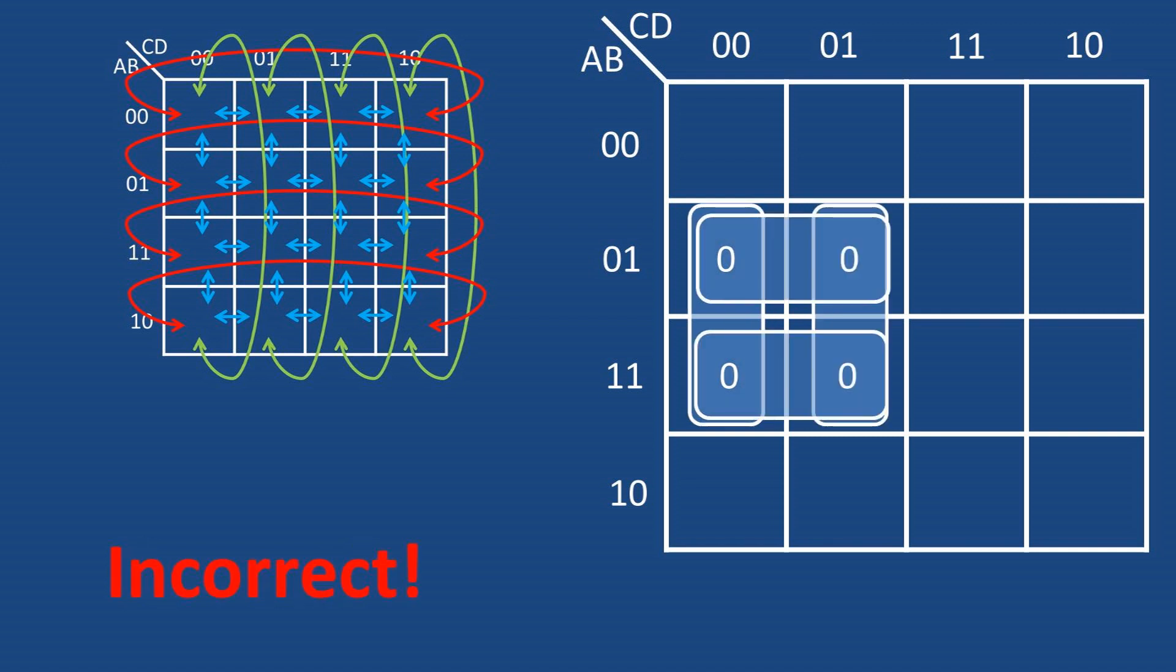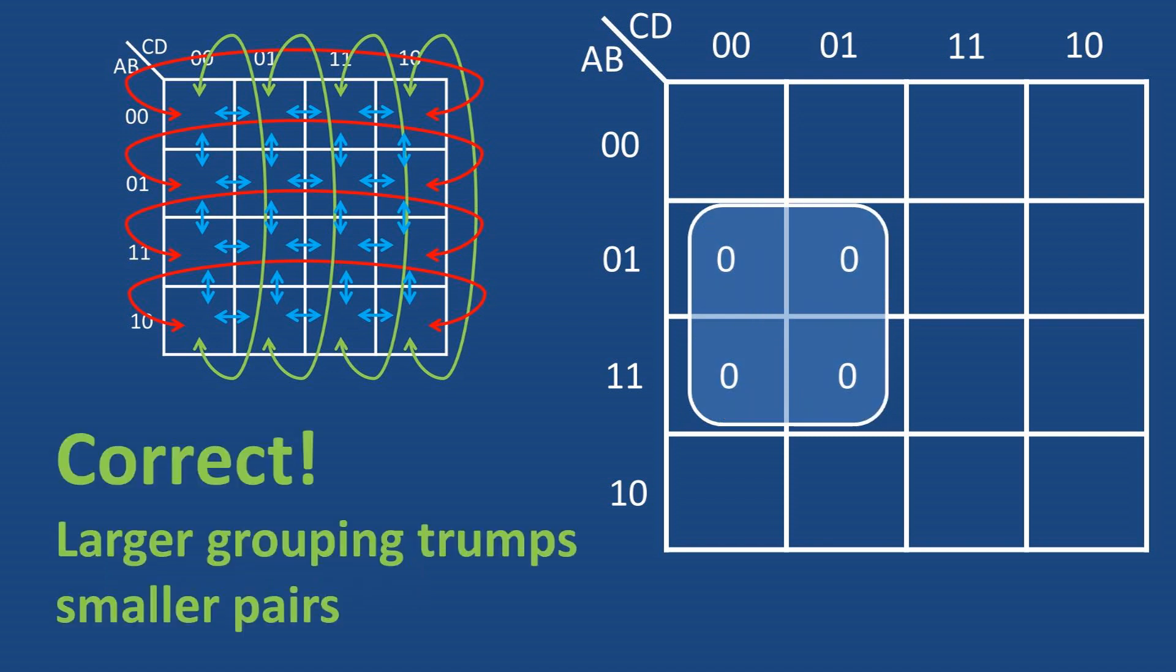Now let's say we have another set of zeros next to it. Would we group it like this? No, we would group it with a box around all the values like this. The box around the values trumps the side by side only match.